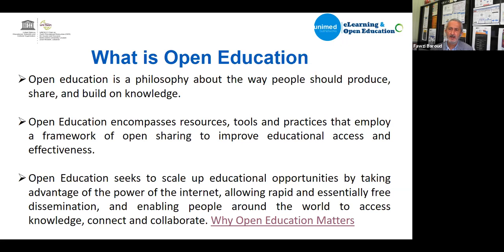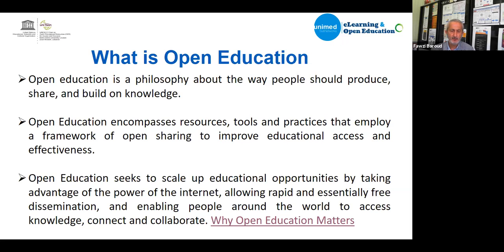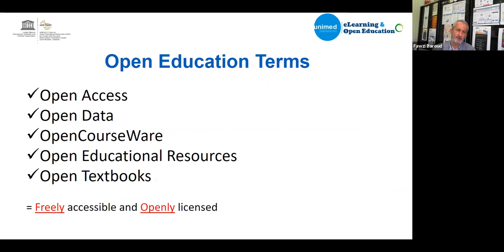If you have a resource in digital format, you can put it somewhere on the internet and thousands of people can find and use it. In the past, a physical book could only be used by one person at a time. The internet enables sharing, but copyright law prohibits it. That's where open licenses came in to solve the issue of sharing and open education.